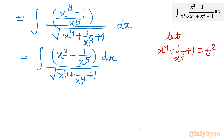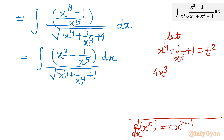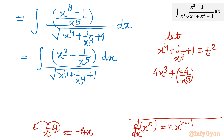Now I will differentiate both sides with respect to x. We know the formula for the derivative: d/dx of x^n is nx^(n-1). By that formula, the derivative of x^4 is 4x^3, and for 1/x^4 written as x^(-4), the derivative is -4x^(-5), which is -4/x^5. So we get 4x^3 - 4/x^5 dx equal to 2t dt.